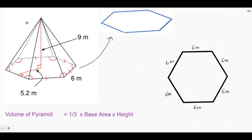To find the volume of the pyramid, we have to find the area of the base, which is a regular hexagon. There are two methods to find the area of a regular hexagon — let us discuss both of them one by one. This red line segment is perpendicular; it makes a 90-degree angle, and the length of this perpendicular is 5.2 meters, as given.